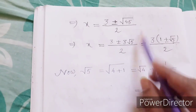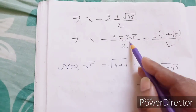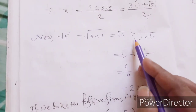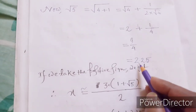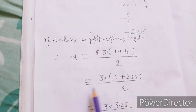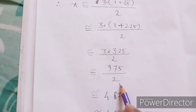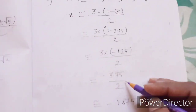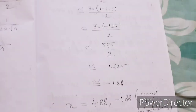√45 = √(9×5) = 3√5. So x = 3(1 ± √5)/2. Now √5 = √(4+1) = √4 + 1/(2√4) = 2 + 1/4 = 9/4 ≈ 2.25. Taking the positive sign: (1 + 2.25) = 3.25, so x = 3×3.25/2 = 9.75/2 ≈ 4.88. Taking the negative sign: x ≈ -1.875 ≈ -1.88. So x = 4.88 or x = -1.88.